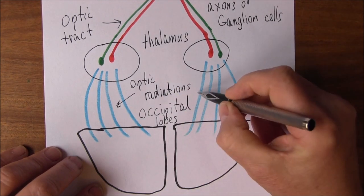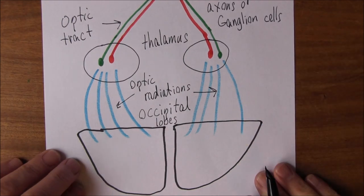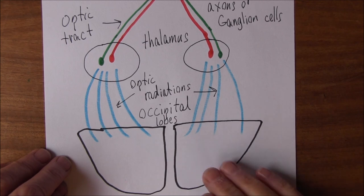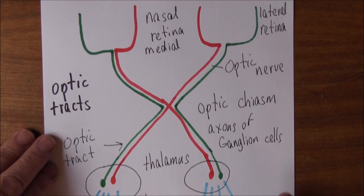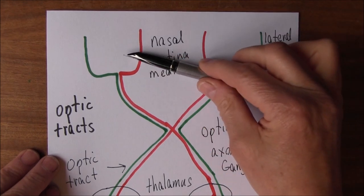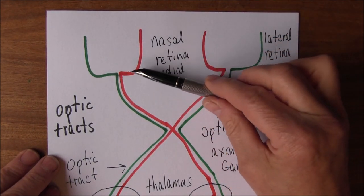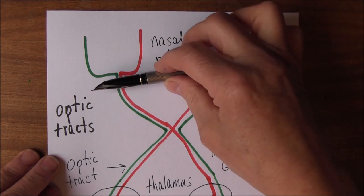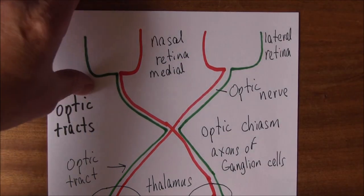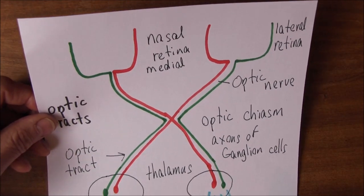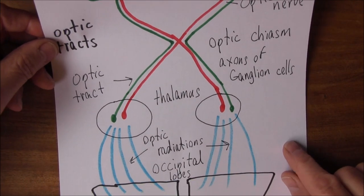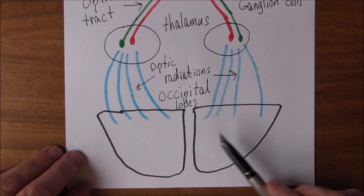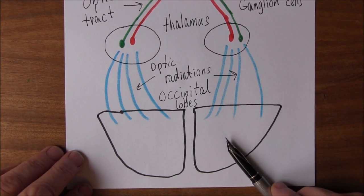The optic radiations are here and here, and then the electrical nerve impulses are perceived in the occipital lobes as light. So what we start off with is real light that is transduced into electrical nerve impulses in the retina. These are coded and transmitted back posteriorly: optic nerves, optic chiasm, optic tracts, thalamus, optic radiations, back into the occipital lobes where they are once again perceived as light.